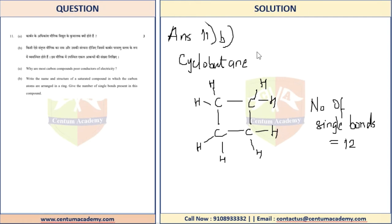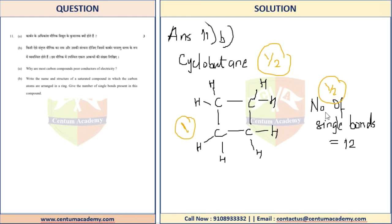Please note the marking scheme: half a mark for writing the name and drawing the formula correctly, and half a mark for writing the correct total number of single bonds. This fetches you a complete two marks. Also note the answer must include a complete structural sketch — do not simply write C₄H₈. You must write the expanded structural form. That's the answer for a three-marker question.